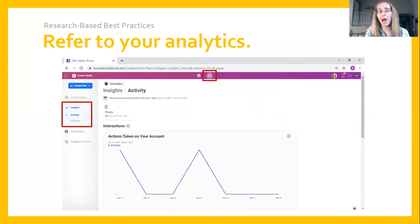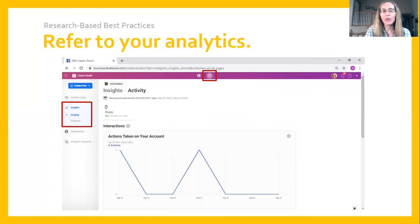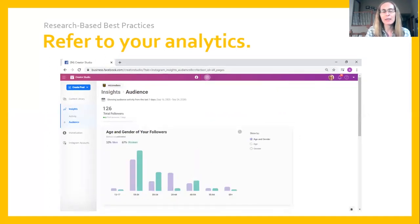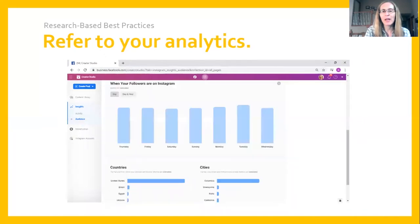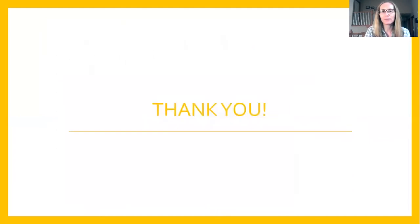You also have the option to access your analytics from the Creator Studio. Just ensure that you have selected your Instagram view at the top of the page, and then you can access two different types of insights: activity insights and audience data. The audience data shows the gender and age distribution of your followers, and also when your followers tend to be on Instagram by time and day — information that's helpful for scheduling your posts when you have the greatest chance to reach the most followers. That wraps up this video lesson. Thanks so much for joining us.